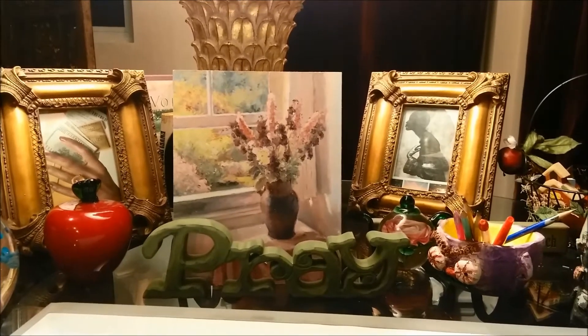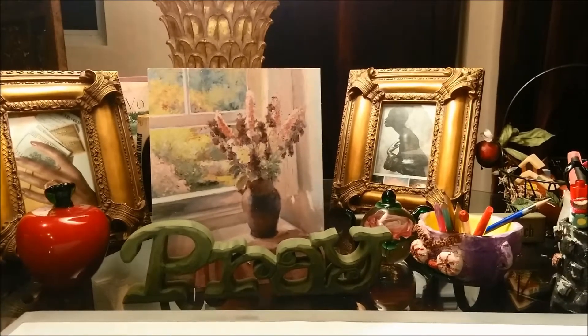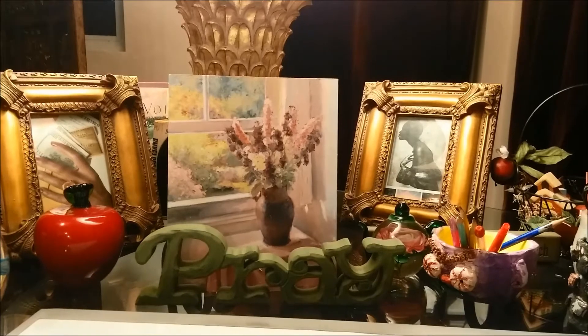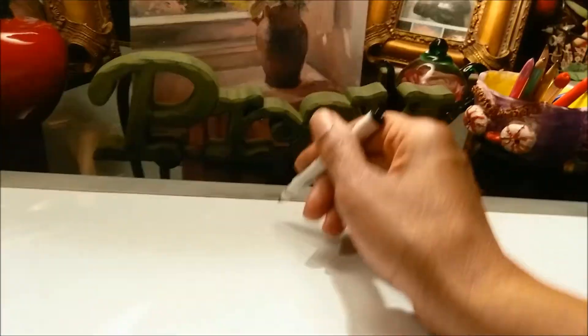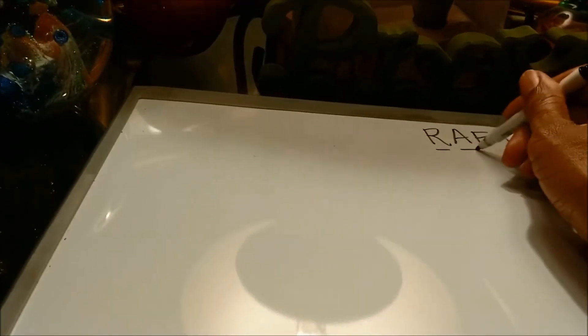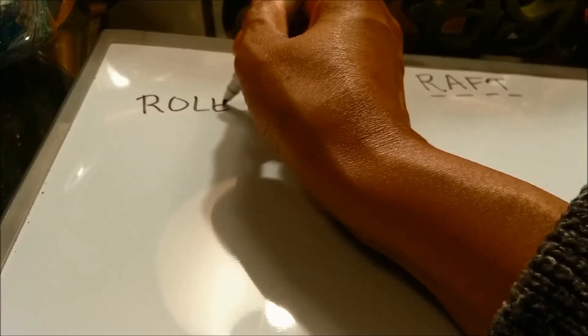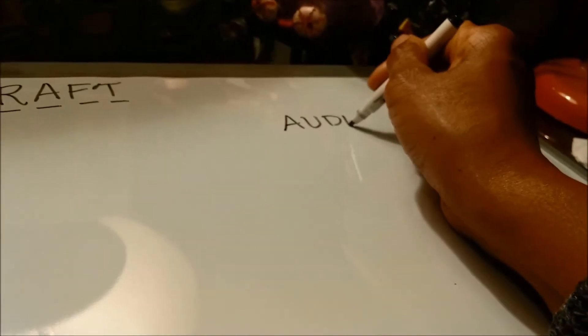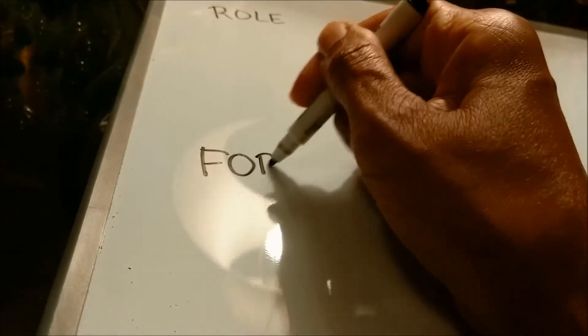I want to talk to you all about a strategy that is very useful for reading comprehension, but you can use this as a study tip in any subject. It's called the RAFT — R-A-F-T. The RAFT is a way for you to experiment with your knowledge and understanding of concepts and information that you've read. Every letter in the word RAFT stands for something: R stands for Role, A stands for Audience, F stands for Format, and T stands for Topic.